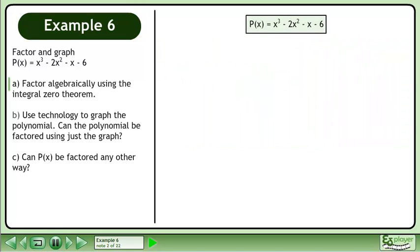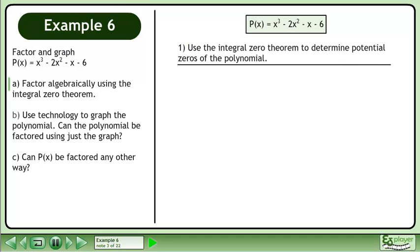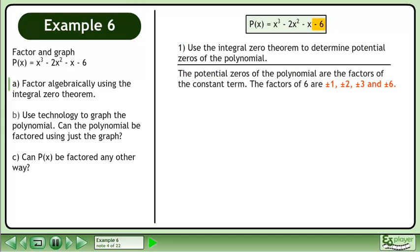Rewrite the polynomial. Use the integral zero theorem to determine potential zeros of the polynomial. The potential zeros of the polynomial are the factors of the constant term. The factors of 6 are ±1, ±2, ±3, and ±6.